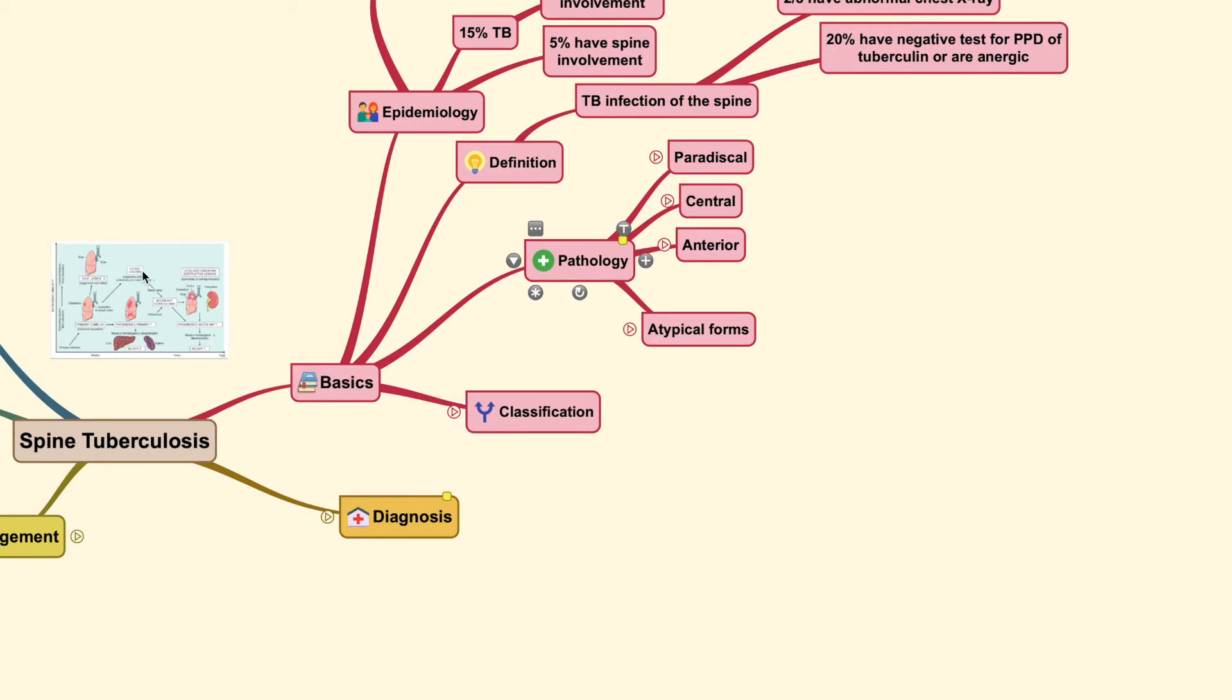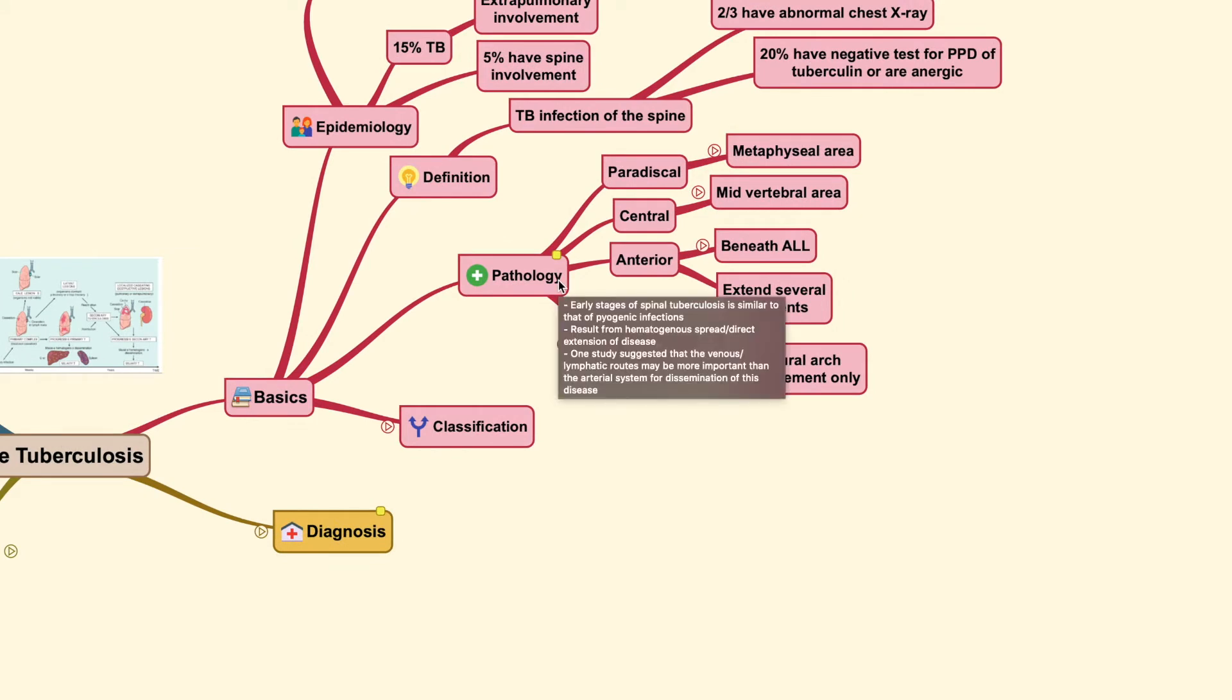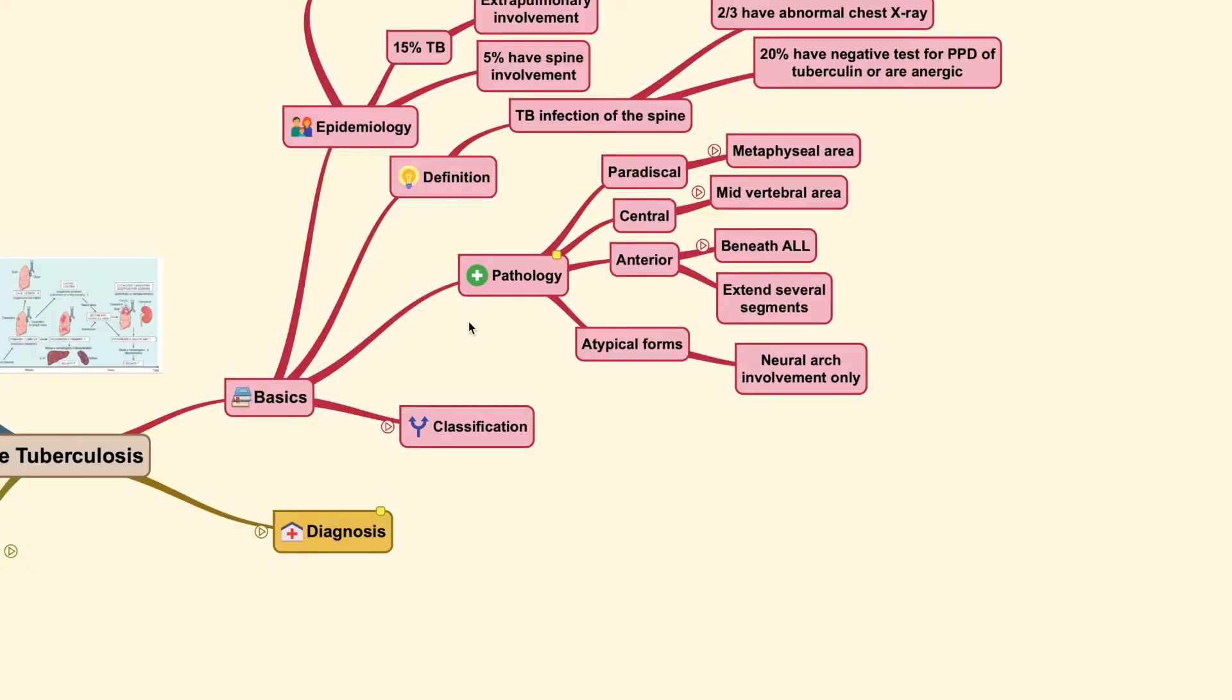Now, moving on, knowing the basic pathophysiology and how it occurs, we could readily explain where the location should be. So, as this infection forms around the spine, usually the early stages of this spine tuberculosis is very similar to those of the pyogenic infection. And it usually is the result of a hematogenous spread from a dormant latent lesion. But it could also be a directly inoculated or direct extension of the disease itself.